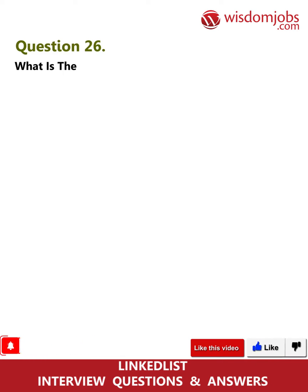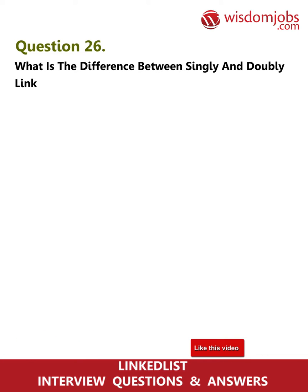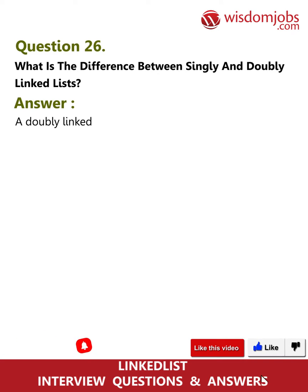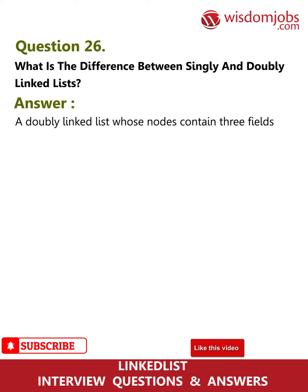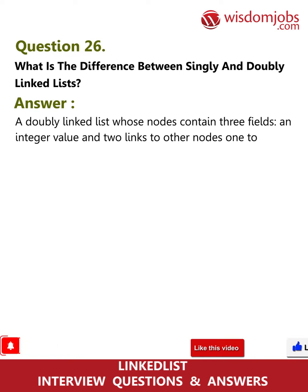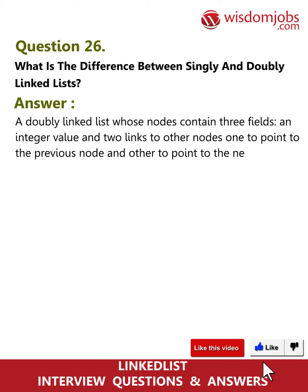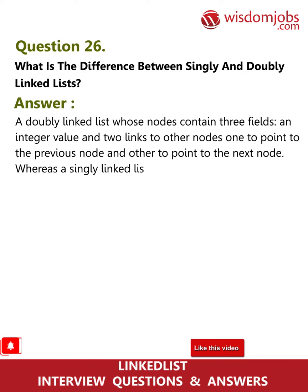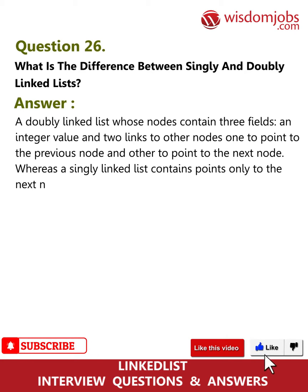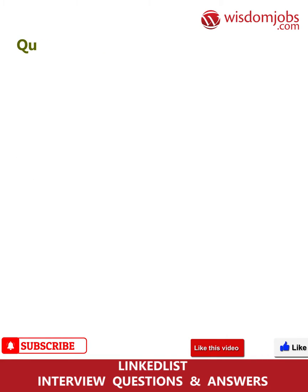Question 26: What is the difference between singly and doubly linked lists? A doubly linked list has nodes containing three fields: an integer value and two links — one pointing to the previous node and one to the next node. A singly linked list contains a pointer only to the next node.